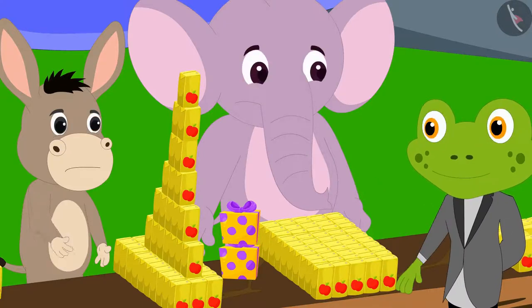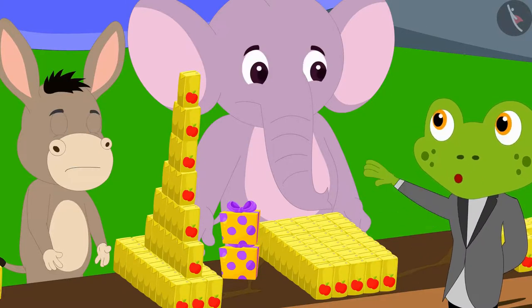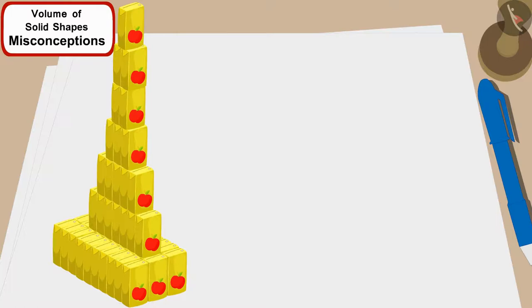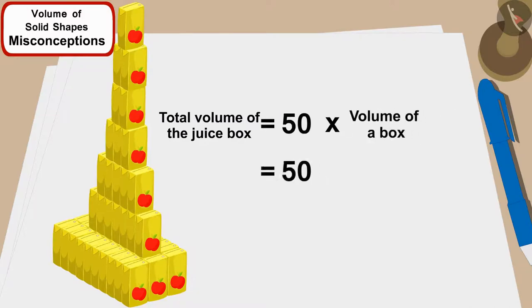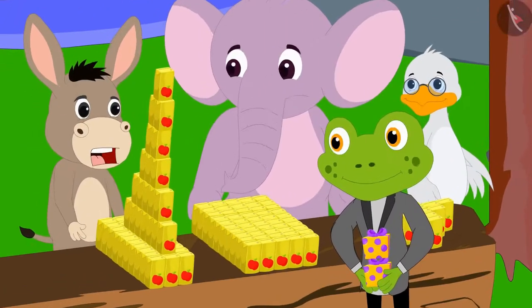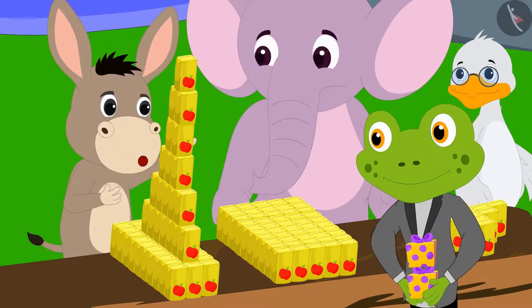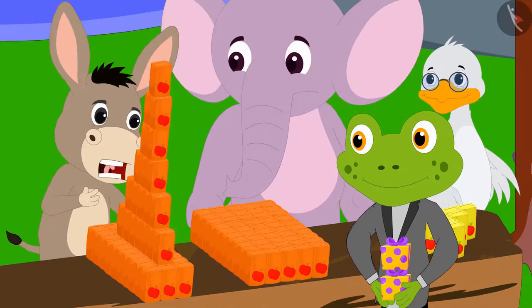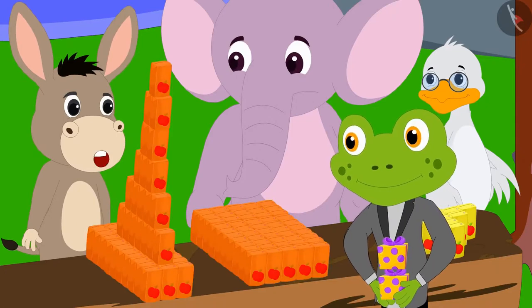Taru then asked Bhola how many boxes he had used. 'I have used 50 boxes too,' Bhola said. Taru asked Appu to calculate: since 50 cartons were also used in Bhola's shape, the total volume would also be 120 × 50 = 6,000 centimeters cubed. Bhola said: 'Oh! Now I get it — even though Appu's and my shapes look different, because we used the same number of boxes, the total volume of our shapes is exactly the same!'